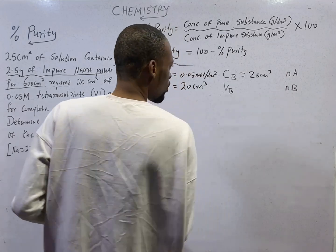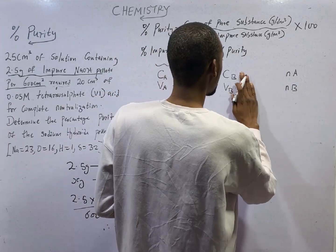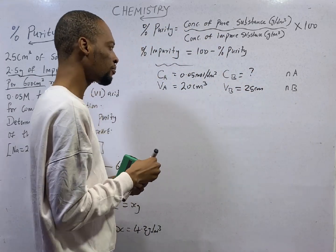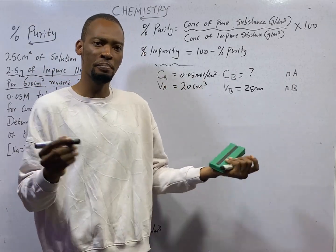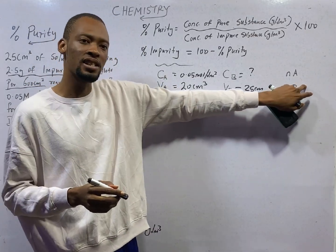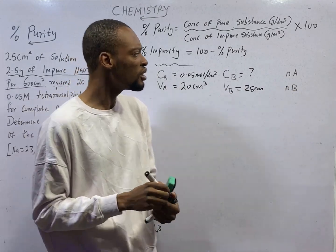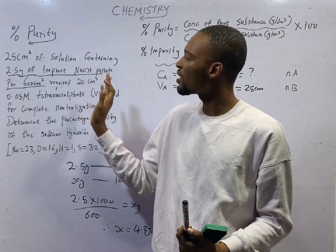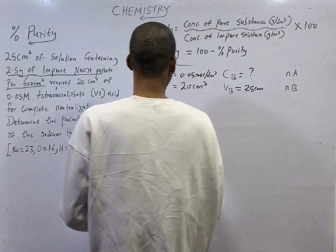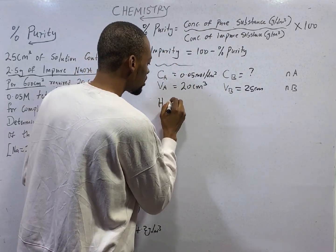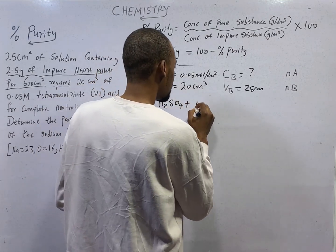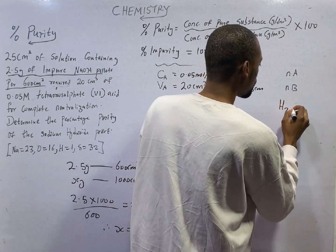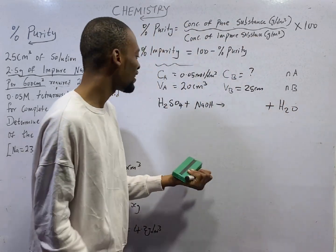We are given the volume of base as 25 cm³, but we are not given the concentration of the base. Also, the number of moles of acid and base — we don't have that yet since we are not given the balanced equation. We therefore need to create the equation. From here we already know that H₂SO₄ reacts with NaOH. So the equation of reaction will be: acid H₂SO₄ plus base NaOH will give us water (H₂O) and a salt.